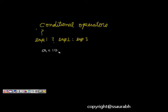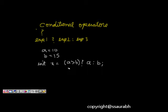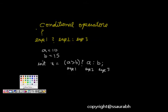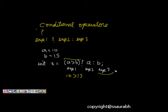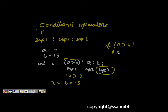We have a = 10, b = 15. Now, int x = (a > b) ? a : b. This means: expression 1 is (a > b), expression 2 is a, expression 3 is b. If expression 1 is true — is 10 greater than 15 — it is not true. So expression 3 will be evaluated and x will become equal to b, which is 15. The equivalent if-else is: if (a > b) x = a; else x = b.